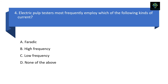Next question: electric pulp testers most frequently employ which of the following kinds of current? Option A: Faradic. Option B: High frequency. Option C: Low frequency. Option D: Monophasic. If we give high frequency, there will be too much discomfort and too much pain. We start with low frequency and then increase. So the answer is Option C — low frequency. You cannot give high frequency or Faradic because it will cause discomfort to the patient.